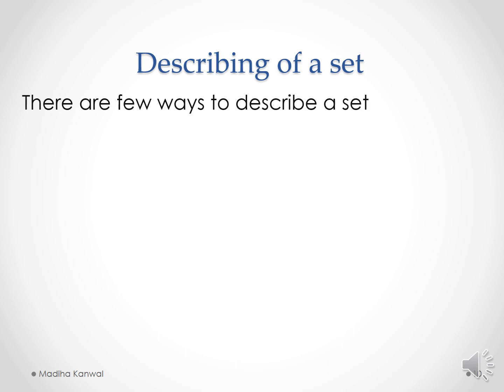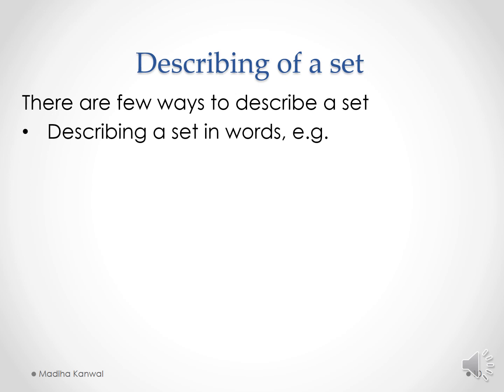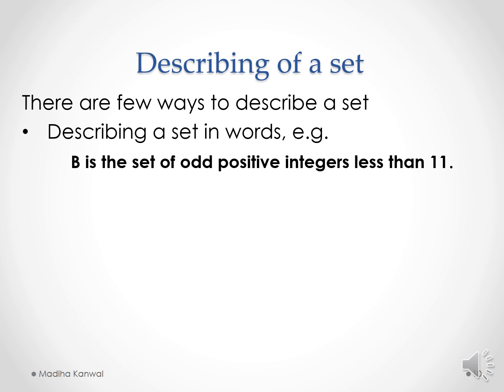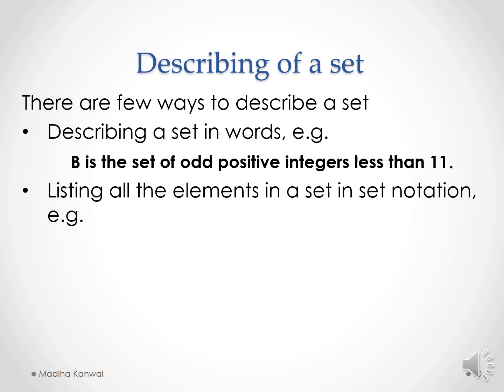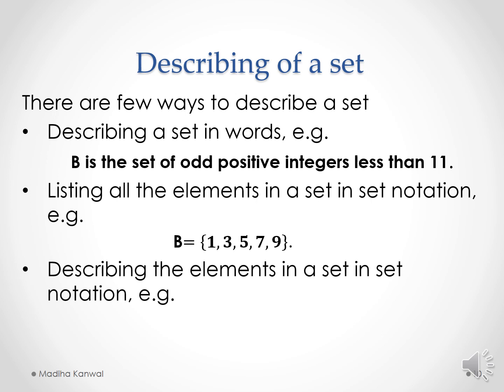Describing a set: there are a few ways to describe a set. The first way is describing a set in words — for example, B is the set of odd positive integers less than 11. The second way is to list all the elements in set notation — for example, B = {1, 3, 5, 7, 9}. The third way is to describe the elements using set-builder notation — for example, B = {x | x is an odd positive integer less than 11}.